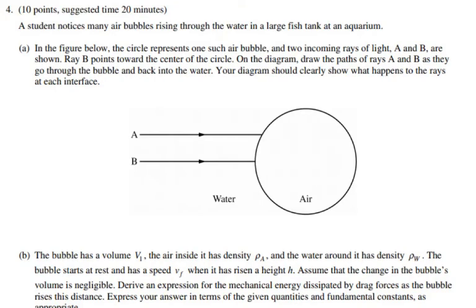This is an AP Physics 2 FRQ question from 2019. A student notices many air bubbles rising through the water in a large fish tank. In the figure, a circle represents one such air bubble and two incoming rays of light, A and B, are shown. Ray B points toward the center of the circle. Draw the paths of rays A and B as they go through the bubble and back into the water. The diagram should clearly show what happens to the rays at each interface.